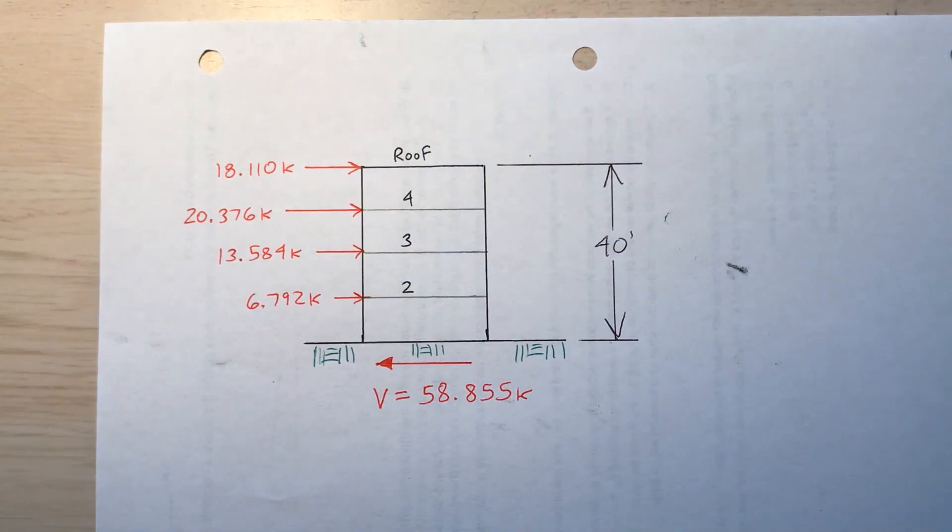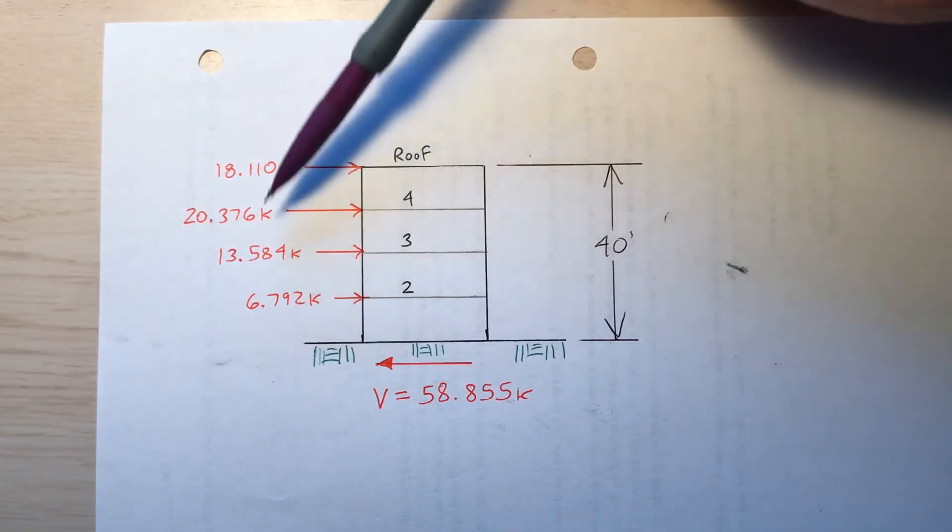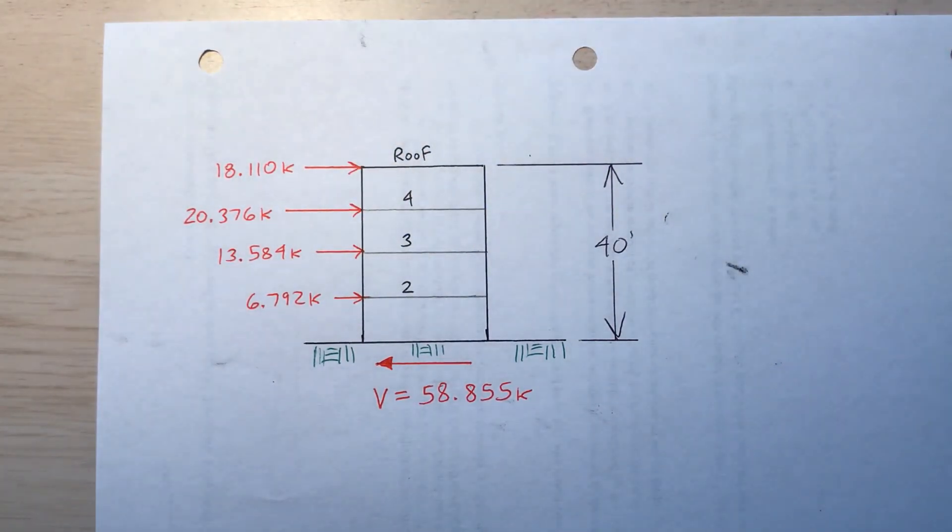So here I show how the forces apply to each of the different levels of this building. Remember the base shear 58.855 kips. And I calculate these loads as being applied to each of the floors.